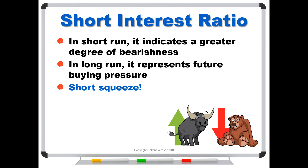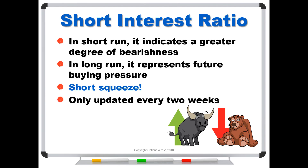One problem with the short interest ratio is that it's not updated in real time — it's updated about every two weeks, around the 15th and end of the month. So once you find that number, it's going to remain the same for days. Still, it's not a bad idea to go in and check it on some companies, whether you're bullish or bearish, and at least take a look at what that short interest ratio is.